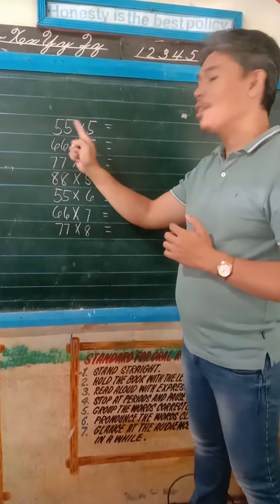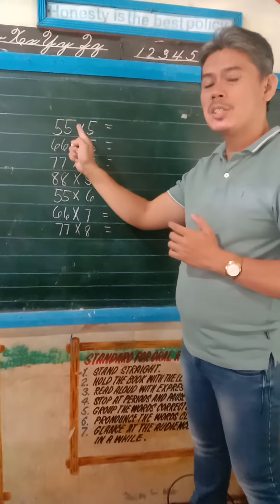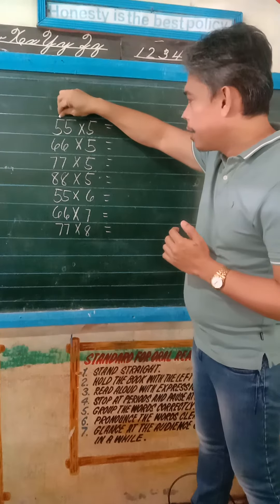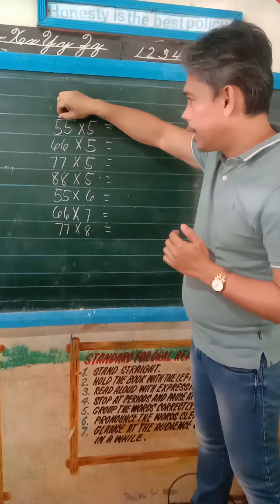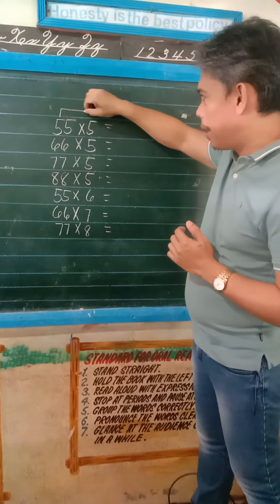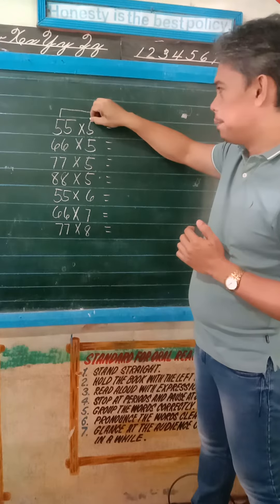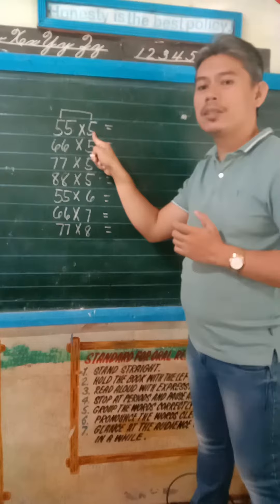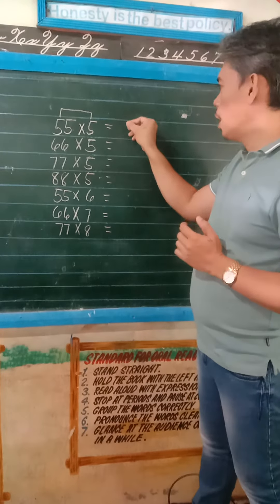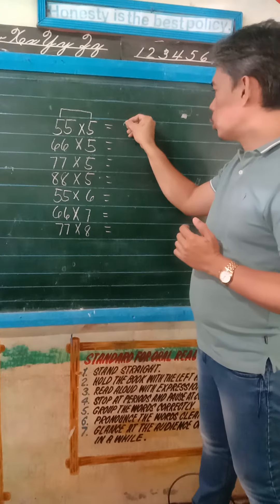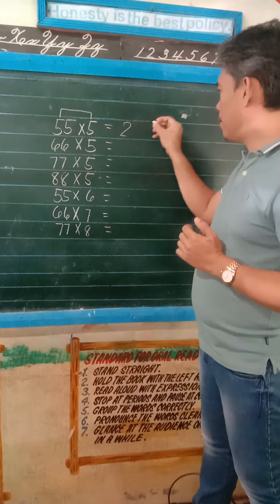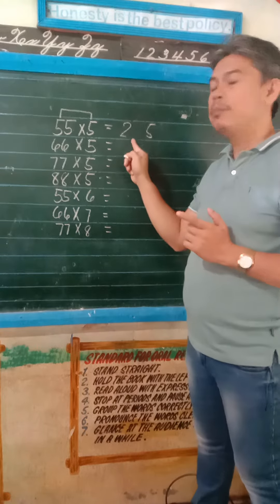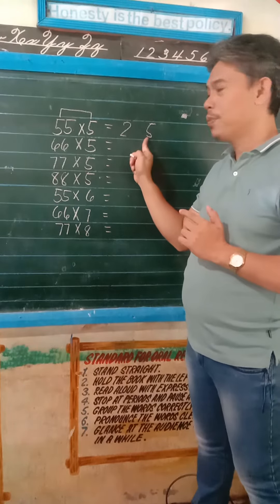55 times 5. What you are going to do is multiply the digit 5 by 5. So 5 times 5 is equal to 25. Write 2 and 5, and leave a space between 2 and 5.